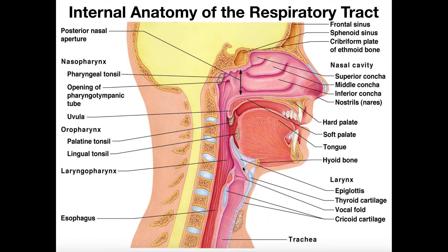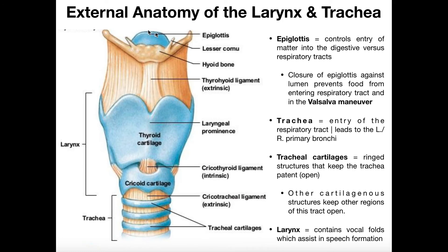This is called the epiglottis — epi means above. The region right below the epiglottis is called the glottis. The glottis is important because it has what are called vocal folds — the vocal cords that allow you to produce speech. A vocal fold would be located in the glottis region. Technically, all of this upper region is the larynx, and some people consider this the glottis region, but the whole thing is really the larynx.